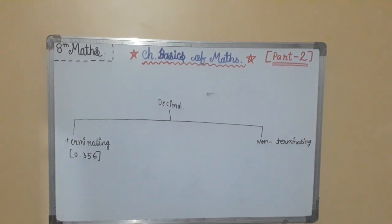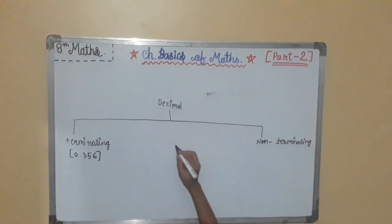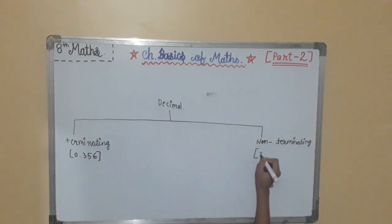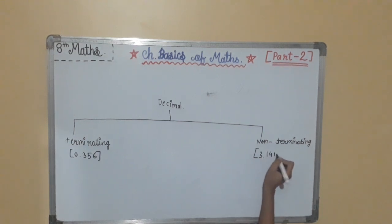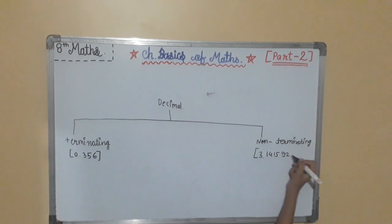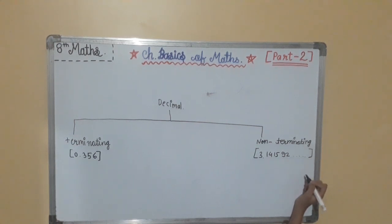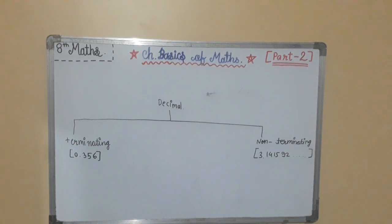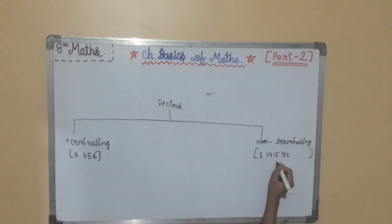Next is non-terminating. Non-terminating means the digits after the decimal point are non-ending — they go on until infinity. An example is 3.141592 and so on.